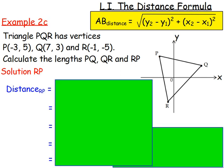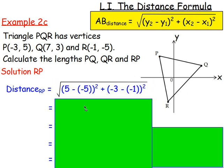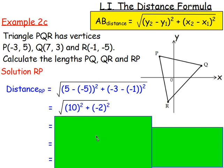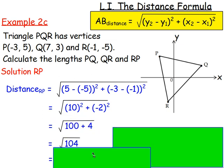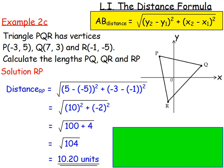And the very last part. So work out the length RP. So between R and P. To do that, you're wanting to use these two points, R and P. And you can do that by just again subbing the values in. So Y2 take Y1 is going to be negative 5 take away 5 all squared plus X2 take away X1 is negative 1 take away negative 3 all squared. So you've got negative 10 squared plus 2 squared, which will give you 100 add 4, which is 104, and then square root it, and you get 10.2 or 10.20 units.